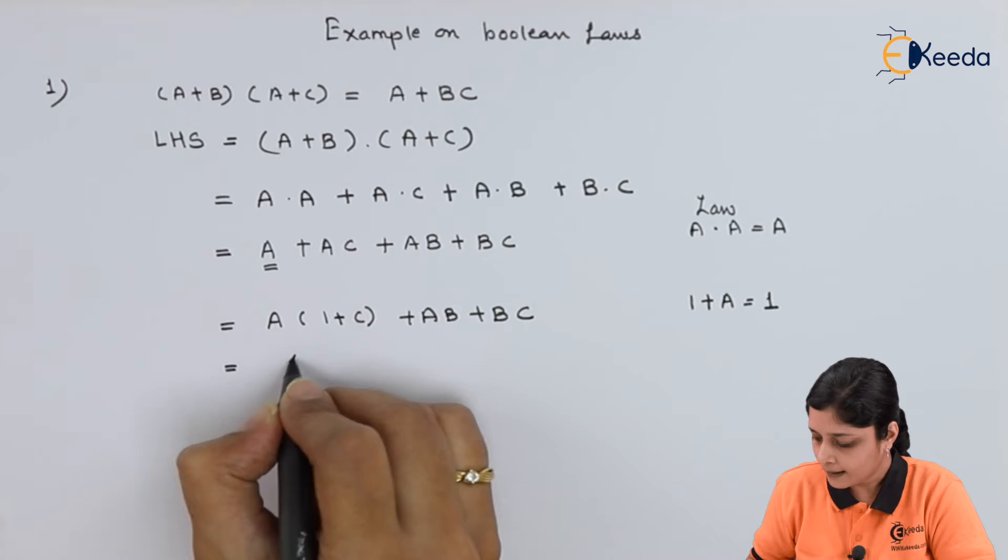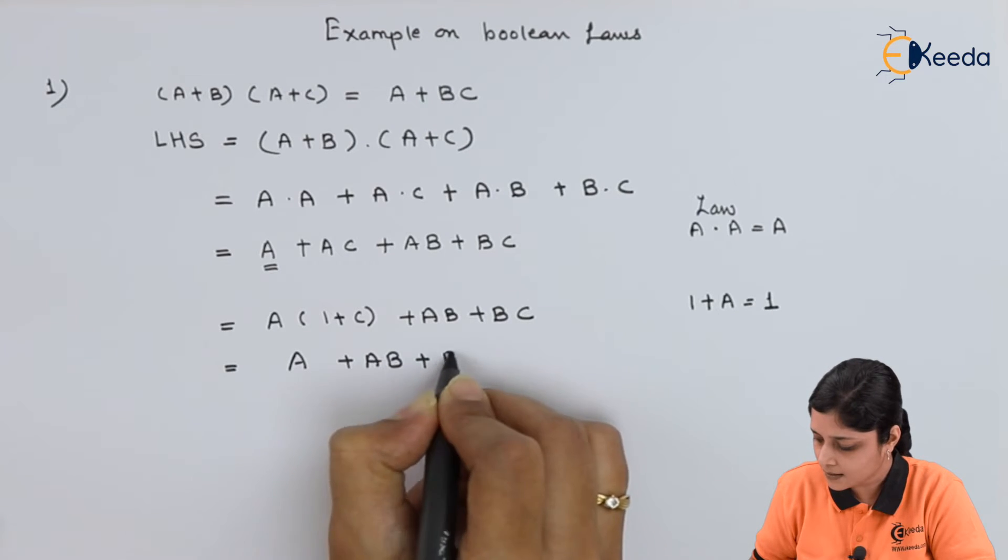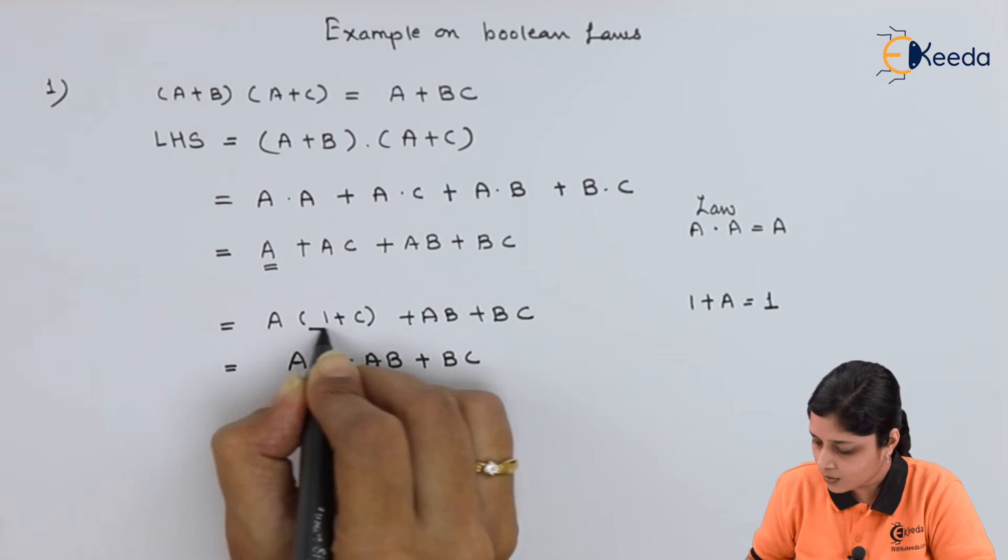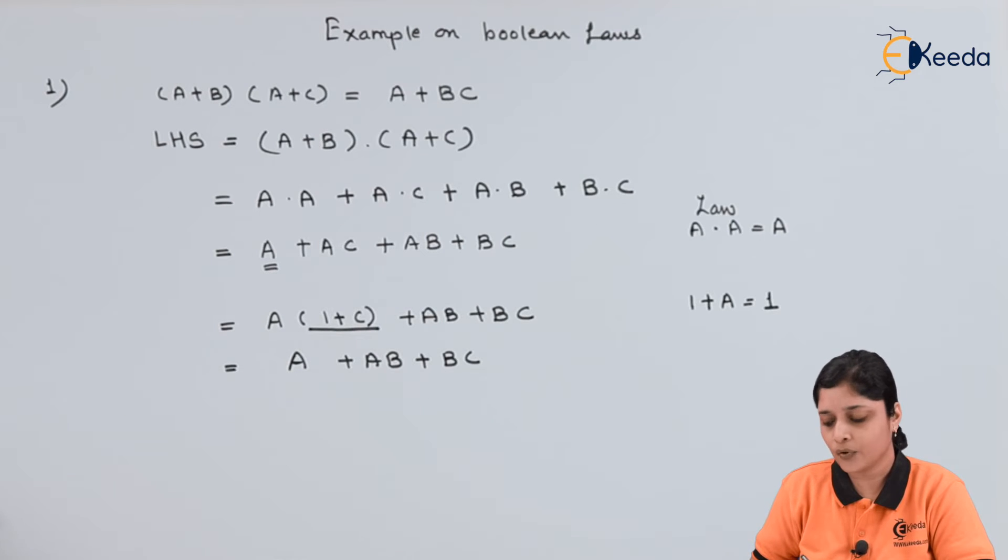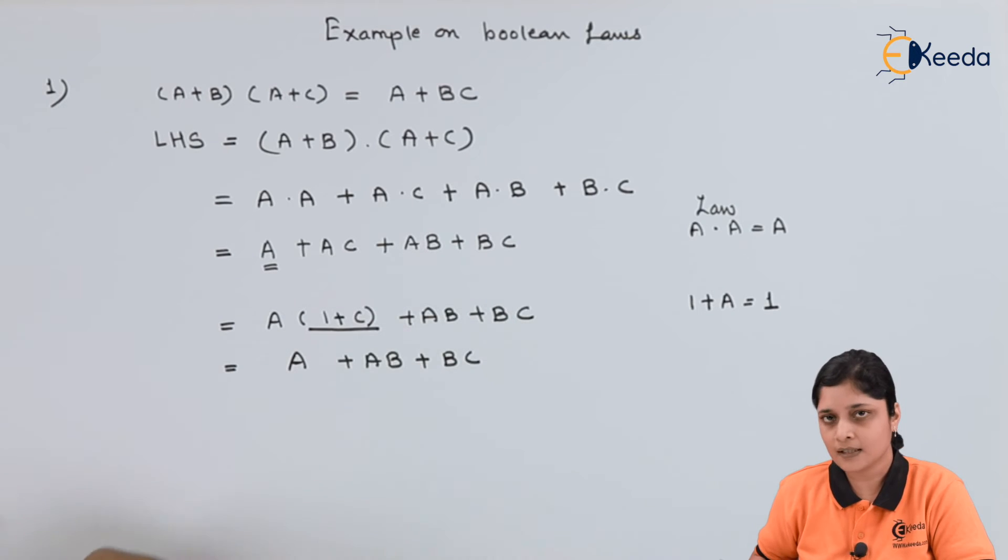So what you will get? A + AB + BC. Because 1+C is 1. This A is a variable. So A here, C is a variable. That's why 1+C is 1.